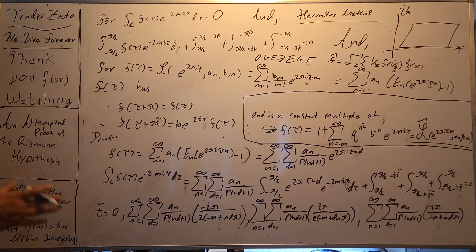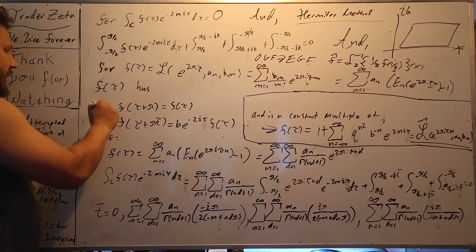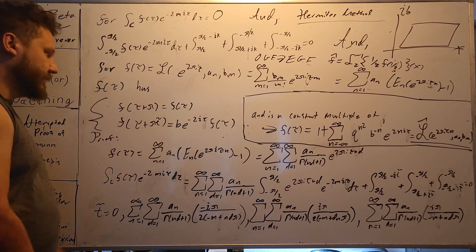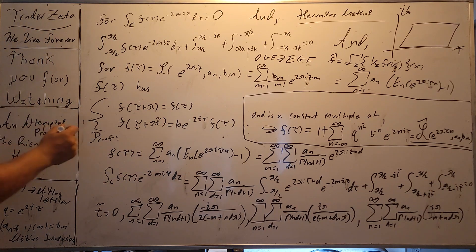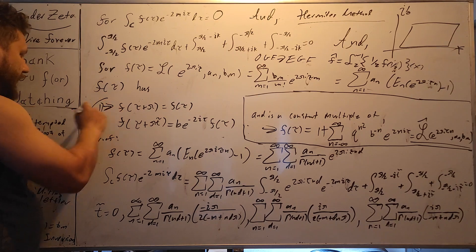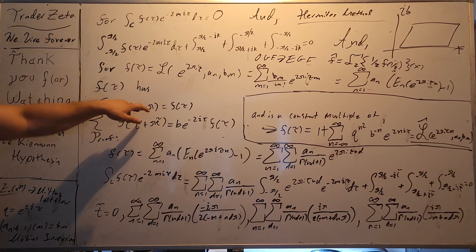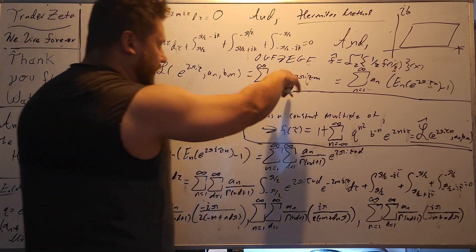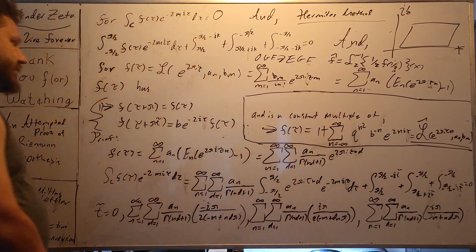So our idea is that we'd like to show that it obeys this functional equation for a certain t tilde. So the first one right here is that it has to be periodic. So this is pretty obvious. Like this is, it's Fourier, has Fourier expansion, we're okay.